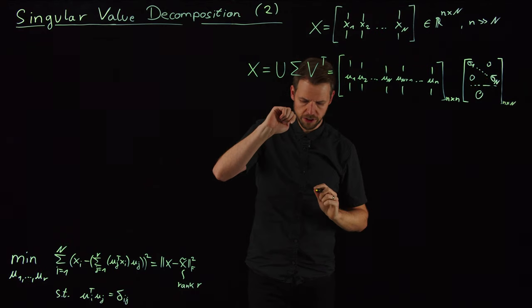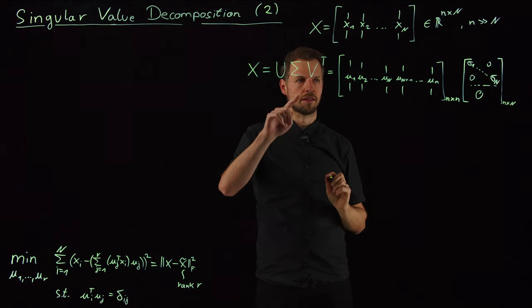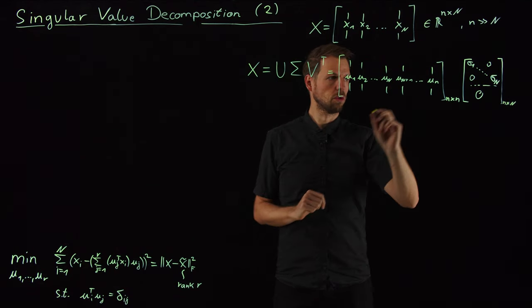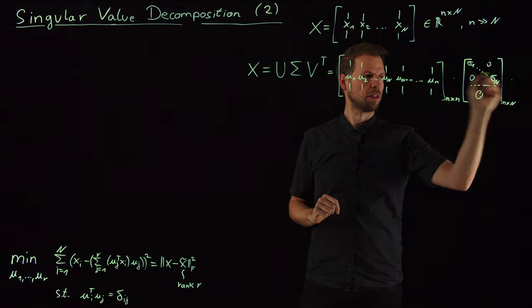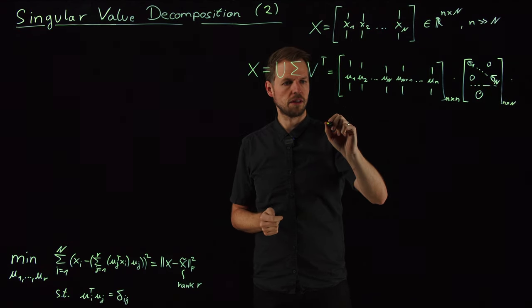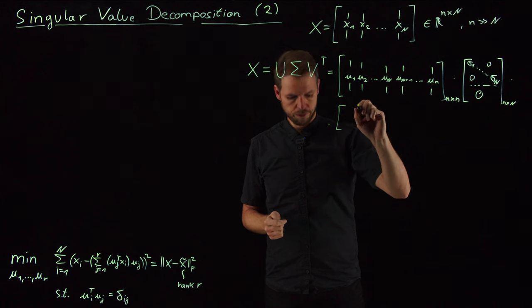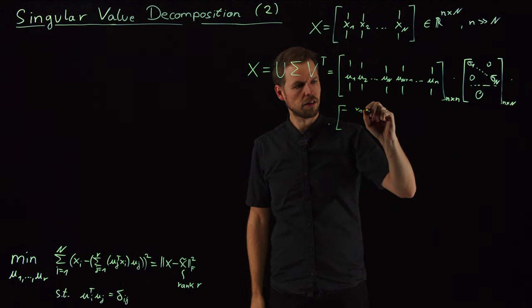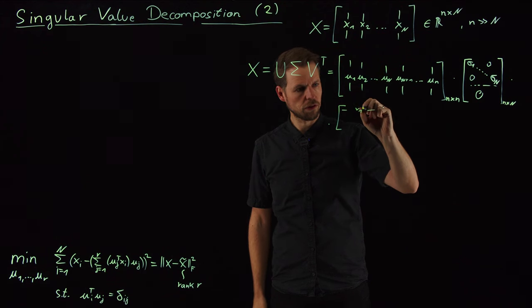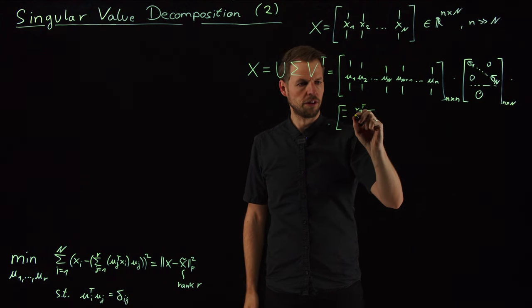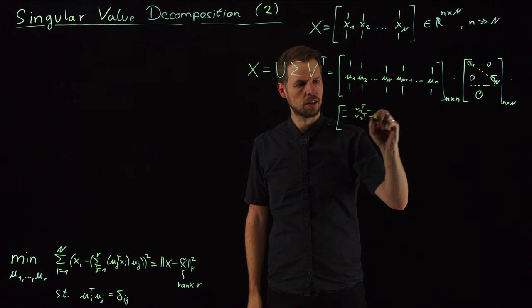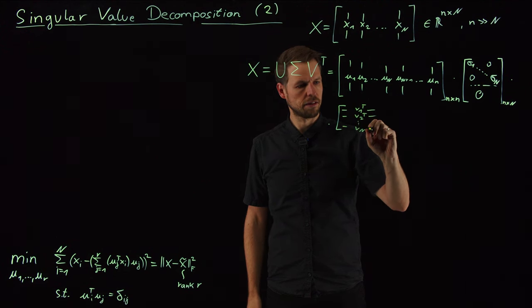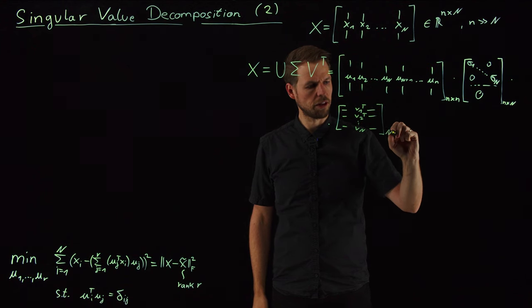And then we have the third matrix, V, which is structured very similarly to the U matrix. So, we have multiplication with this, multiplication with this, and this gives us the V matrix, which is now, since we have the transpose, what we get is, this is the V1 vector, or the transpose of it. This is the V2 vector, until the N. And so, this is an N by N matrix.